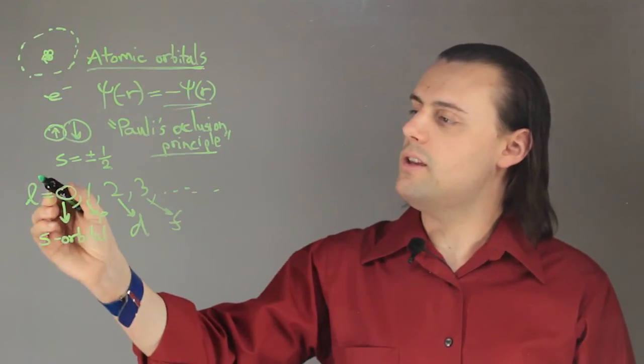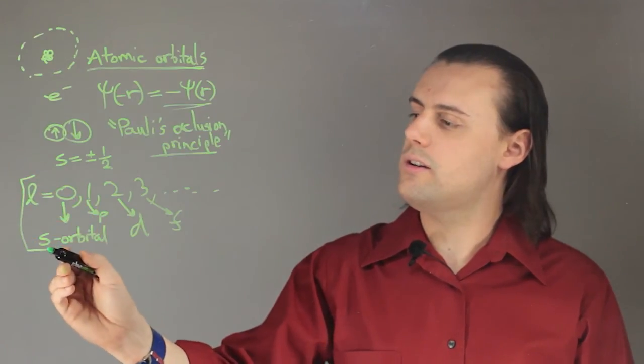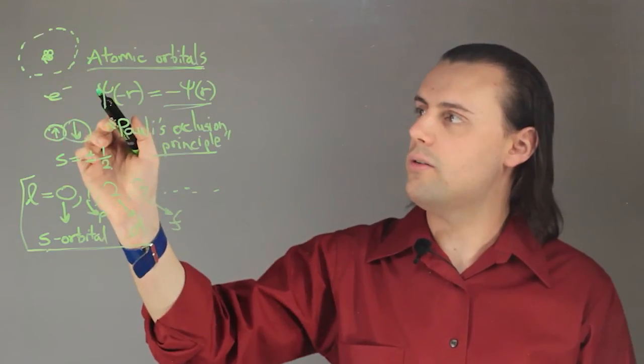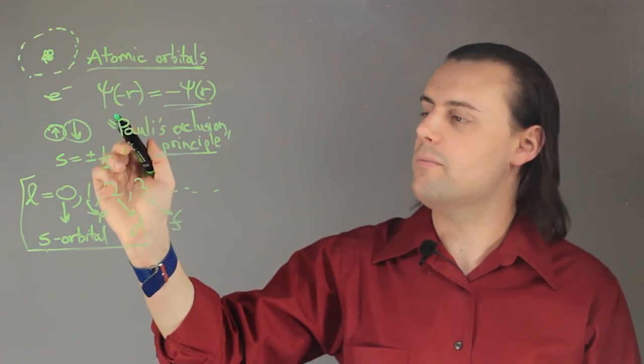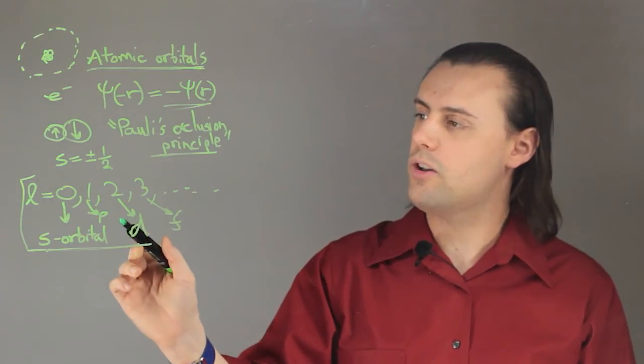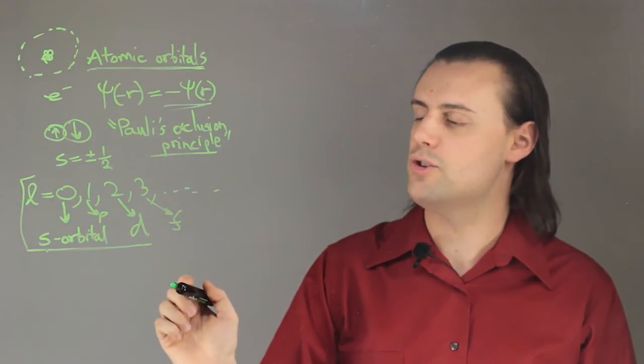And these are the different configurations of the electrons around the nucleus of the atom. And again, for more orbitals for the electrons to occupy, you need higher and higher energy levels.